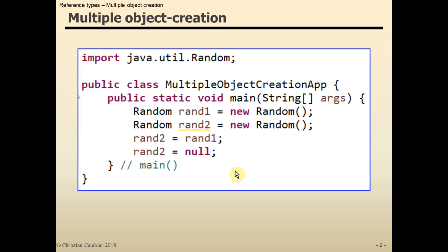The code I'll be demonstrating consists of this class with just the main method. In this method I will create two random objects after which I'll assign two different values to the rand2 reference variable. Let's see what happens behind the scenes in our memory layout.